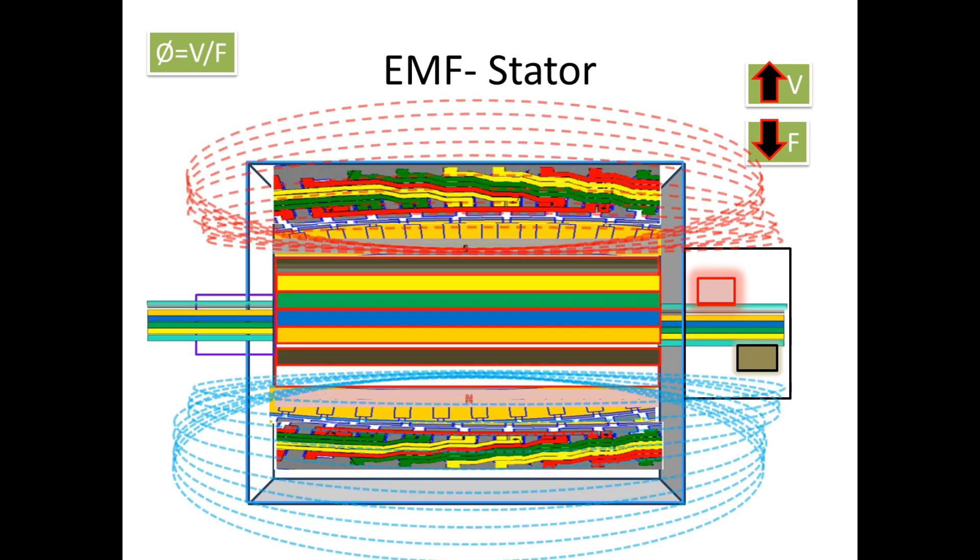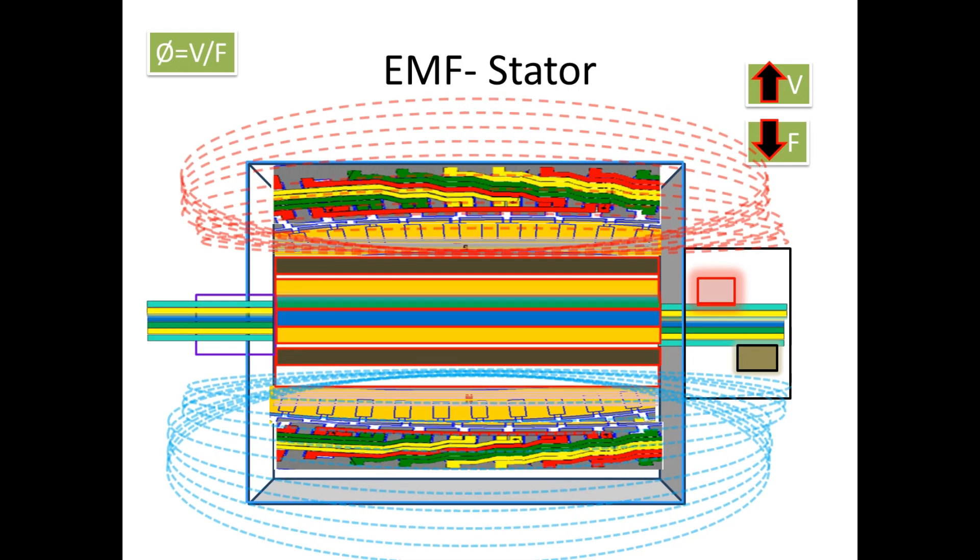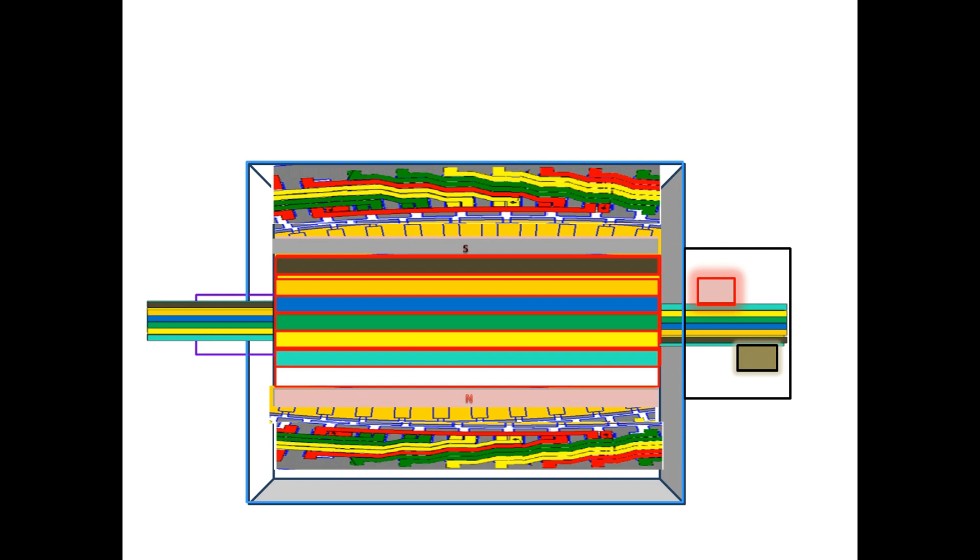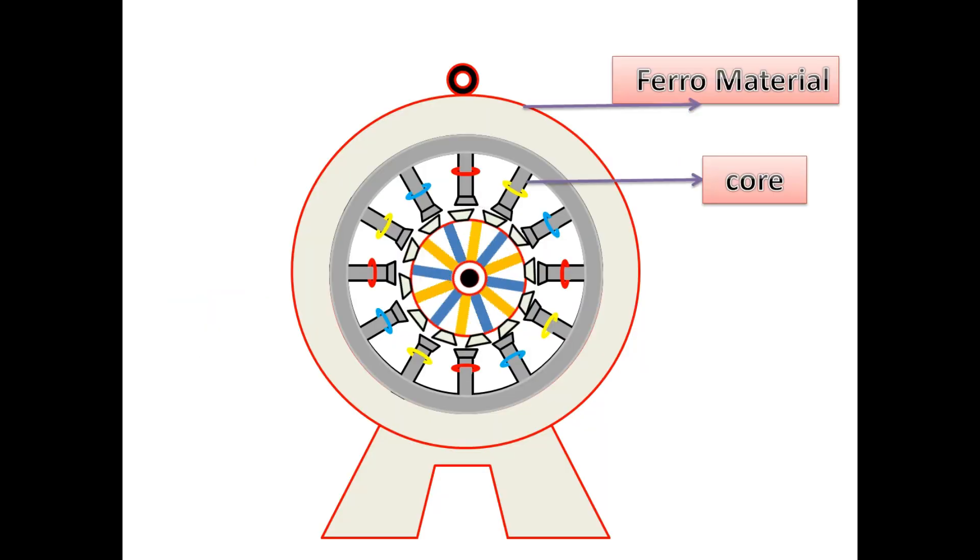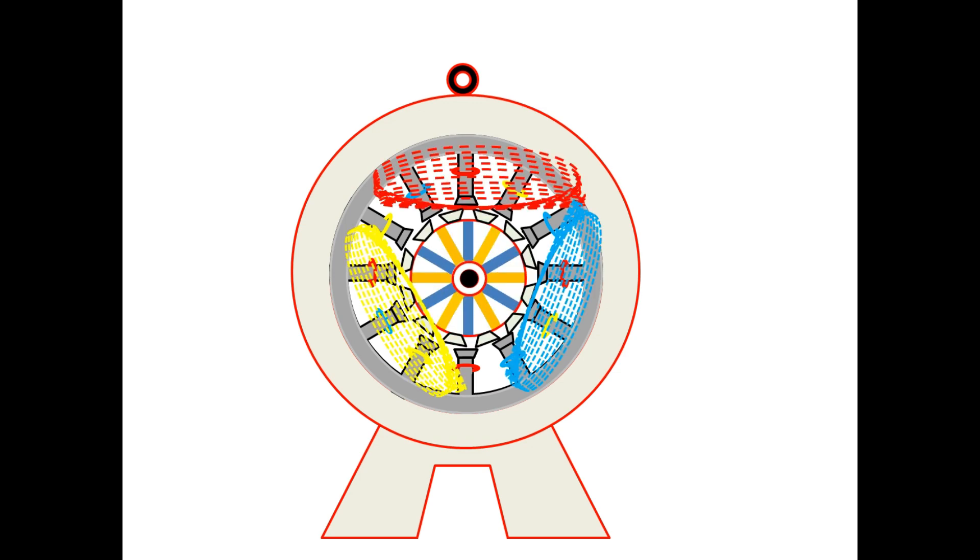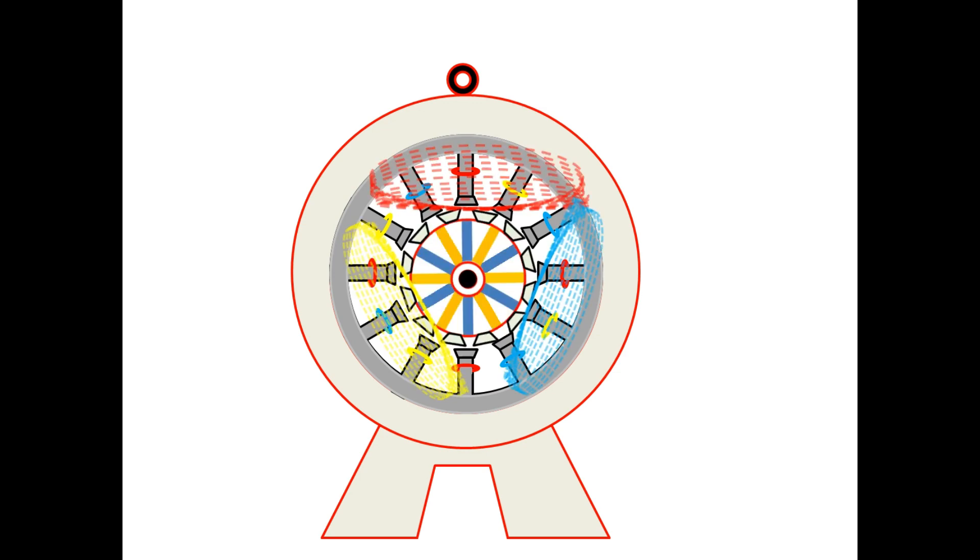If you see the overall generator parts, the outer covering part of the yoke is made up of iron. It is also a conductor. In generator running condition, if the flux increases, this increasing flux not only affects the stator but also comes to the yoke.